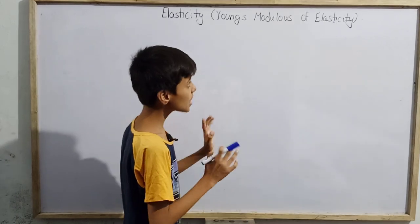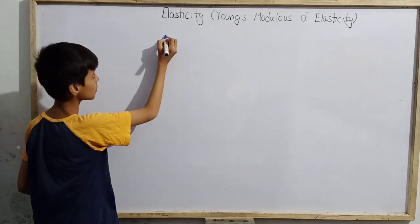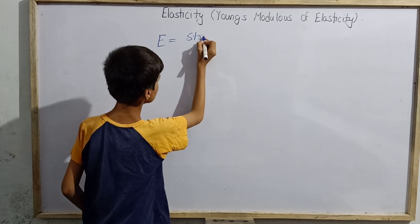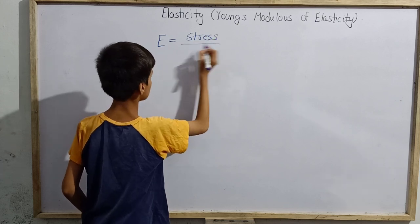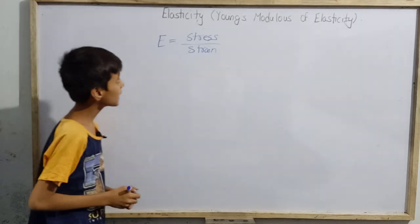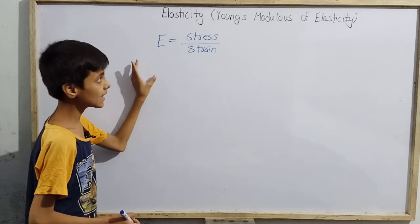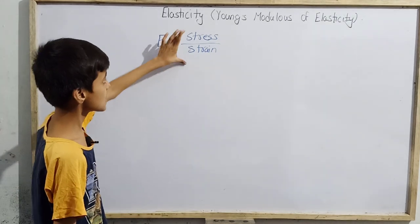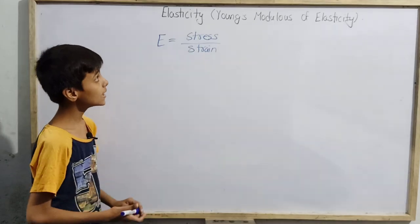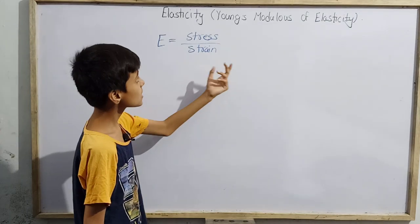First, let us recall what is modulus of elasticity, which I have already covered in my previous video. It is generally denoted by the letter E, whose magnitude is stress divided by strain. So E equals stress divided by strain, meaning modulus of elasticity is the ratio of stress and strain.